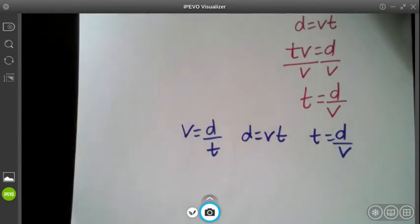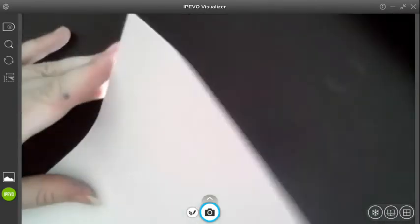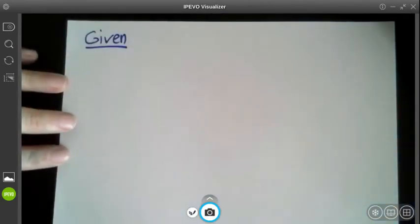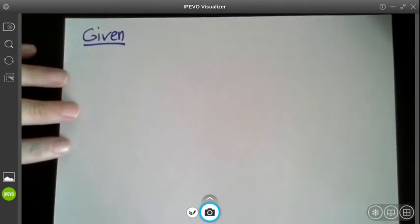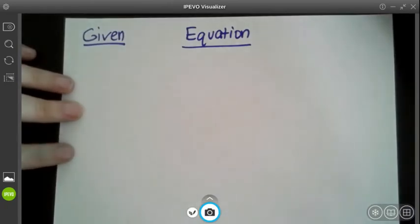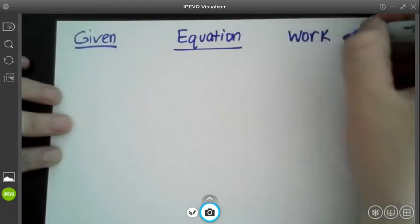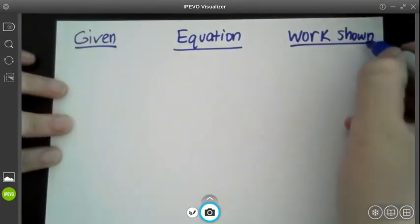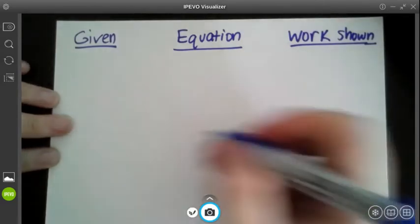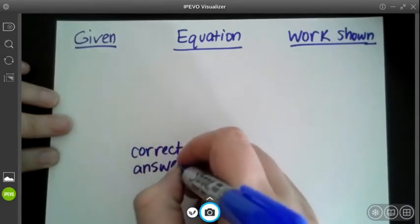We're going to do a couple problems just so we can apply this formula and this knowledge. Whenever I do a problem, I'm going to set them up the same way. Problems are five points. And I'm going to show you how I set them up. I'm always going to start with what I'm given. And what I mean by that is what is in the equation itself or what's in the problem. Physics problems are going to be word problems. So we have to pull out the information that we're given. The other thing that I need to include is the equation. What equation do I need in order to solve the problem? After that, I need to make sure that I show my work. So when we do this, I want you guys to do this on paper and then you can send pictures of it to me. The other two things are going to be the correct answer will be worth a point and then the correct unit.